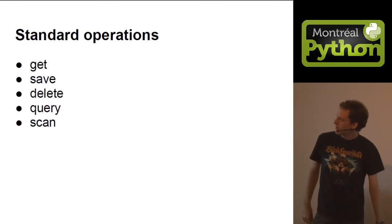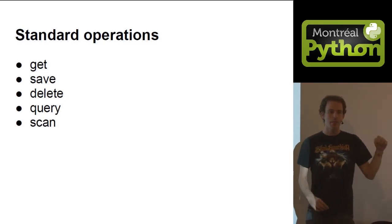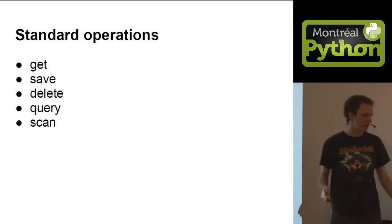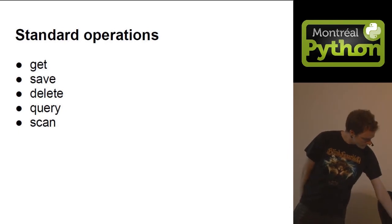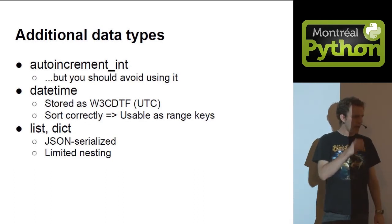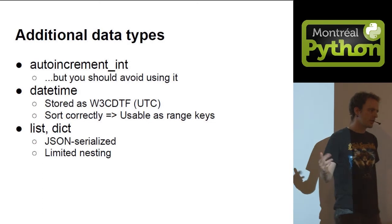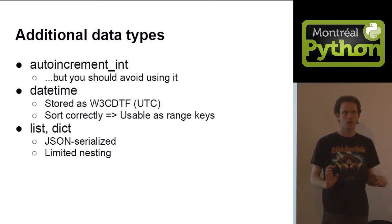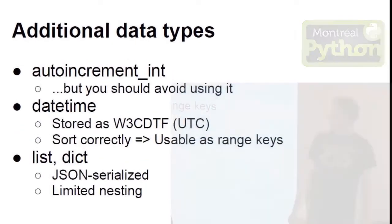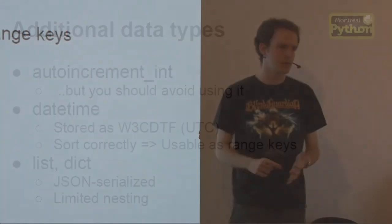All standard operations are supported — get, save, delete, query, scan — as class methods with natural APIs: MyClass.get(hash_key=whatever, range_key=whatever). You can also call other methods on instances. We added support for auto-incrementing int keys via DynamoDB atomic counters, though it's better to use a natural unique identifier when possible. At Ludia, for example, we use the Facebook user ID as the key in the user table.